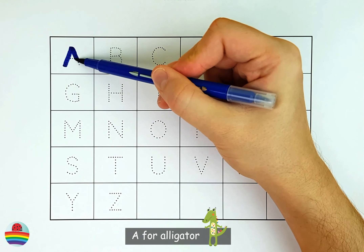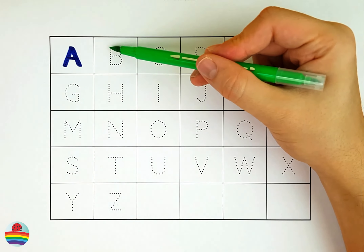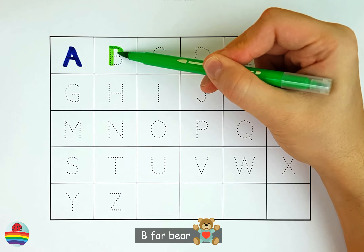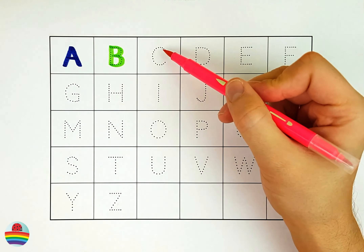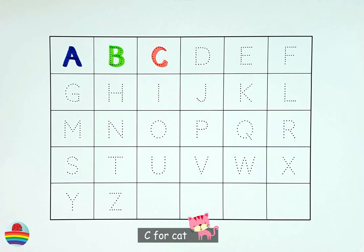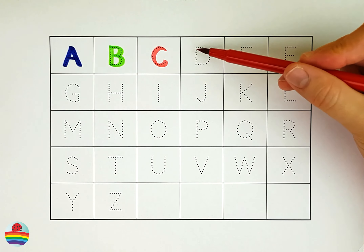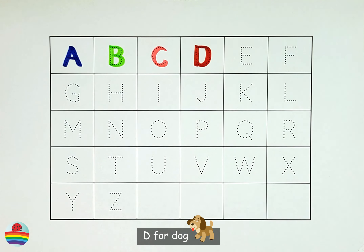A. A for Alligator. B. B for Bear. C. C for Cat. D. D for Dog.